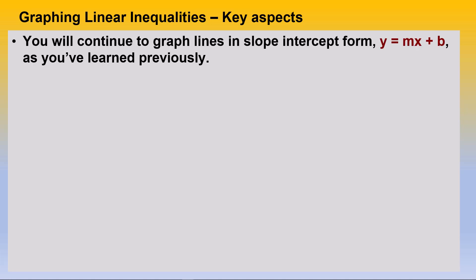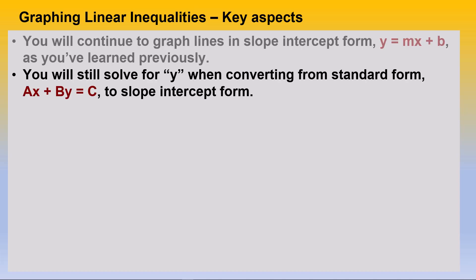Here are the key aspects of graphing linear inequalities. You will continue to graph lines in slope-intercept form, y equals mx plus b, as you've learned previously. You will still solve for y when converting from standard form, ax plus by equals c, to slope-intercept form.